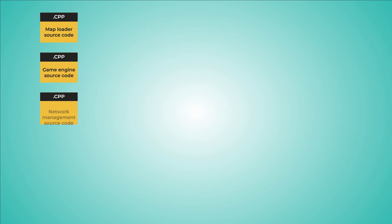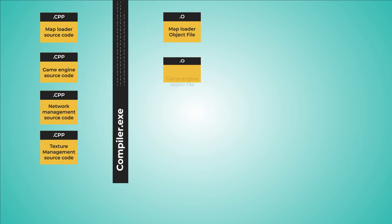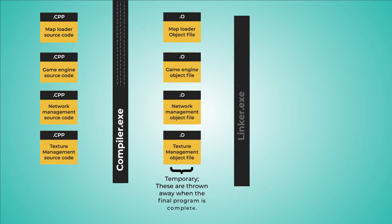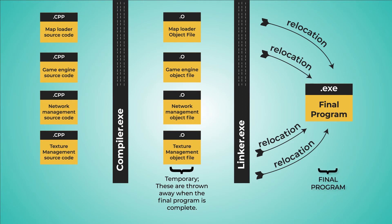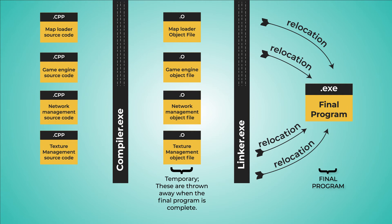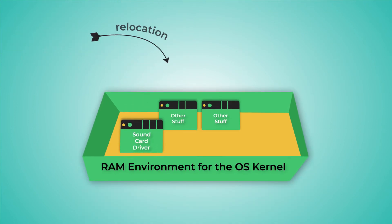There are two main ways that relocatable objects are used. First, they are used by compilers as intermediate files when translating source code into binary code. In this use case, relocatable objects are used as temporary placeholders for snippets of code when the compiler is creating an executable binary or shared library file. When used this way, they are temporary — used and then thrown away when the final file, either an executable binary or shared library, is completed and ready to be executed.